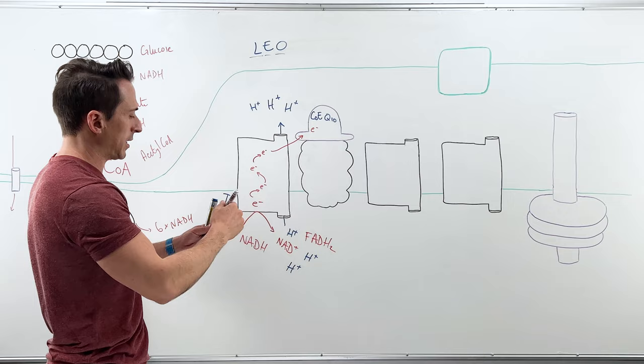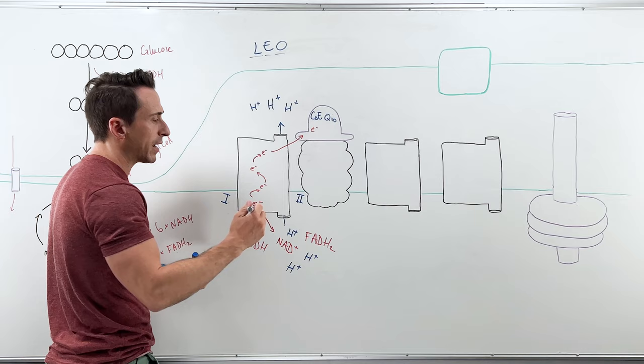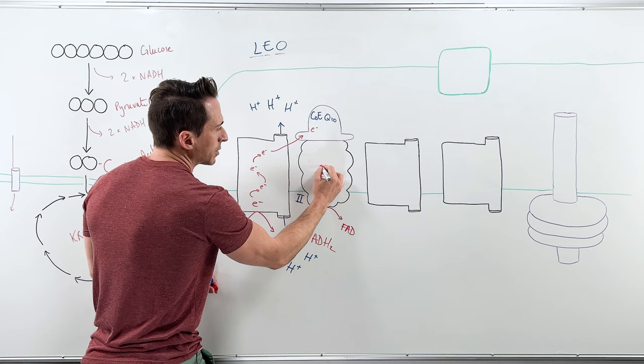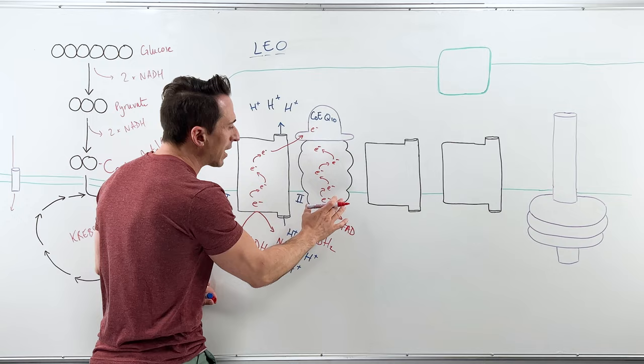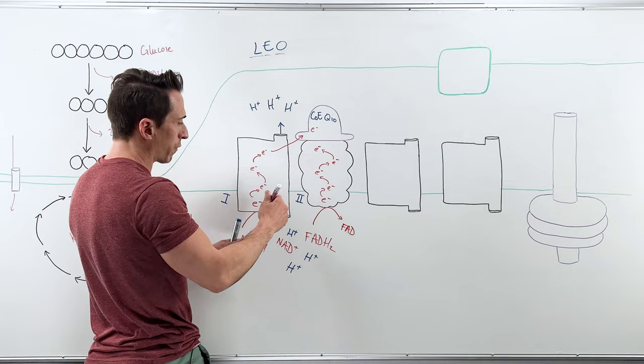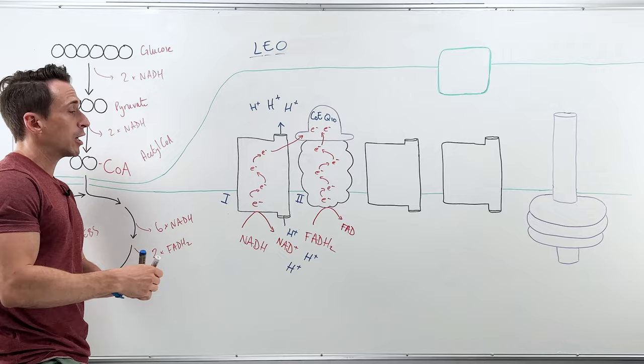Next thing is this. This is now complex two. This was complex one. This is complex two. Complex two does not steal electrons from NADH, but it does steal electrons from FADH2 producing FAD. Similar thing. The electron jumps in and a whole bunch of redox steps occur, which ends up exciting this particular protein, but there is no transmembrane channel for the hydrogen to be pumped across because it's got the coenzyme Q10 hat on it. There's no room for it to move through. So it excites it, but ultimately its job was just to steal the electrons from FADH2. And again, passes it off to coenzyme Q10 because just like complex one, complex two can't hold onto it. So it passes it off.